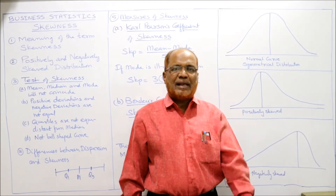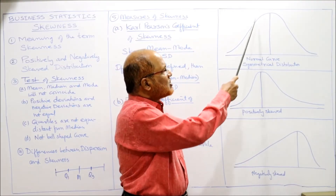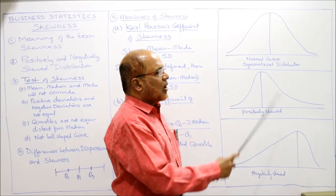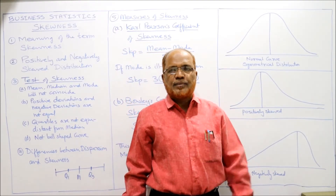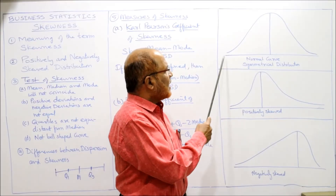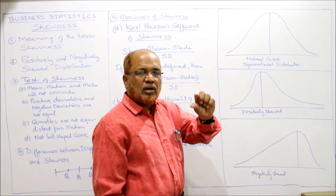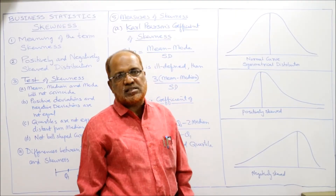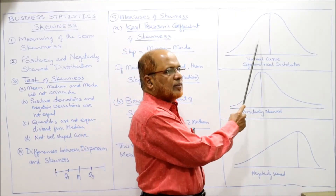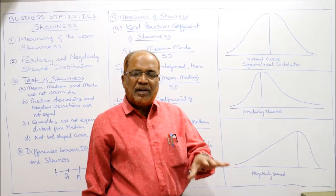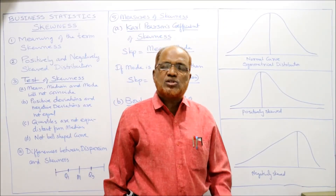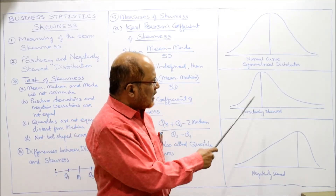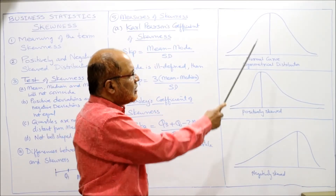A symmetrical distribution is a bell-shaped curve. The tails of this normal curve extend to infinity — they come closer and closer to the axis but never touch it. In the case of a skewed distribution, it is not bell-shaped. The bell shape indicates symmetry, while a non-bell shape indicates skewness.